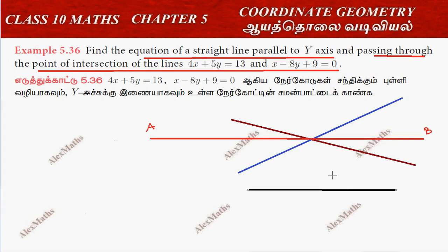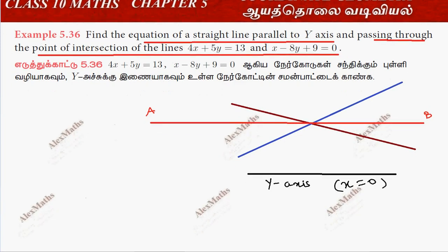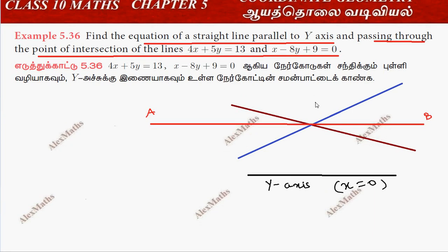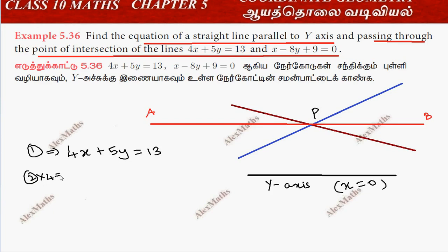For a line parallel to the y-axis, x is equal to a constant. Now let's look at the two given equations. The first equation is 4x plus 5y equal to 13.